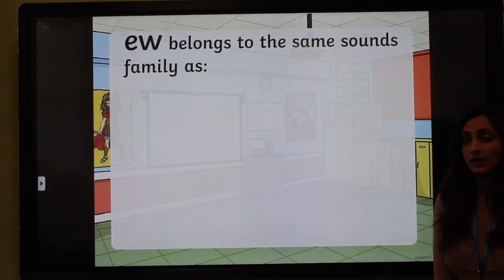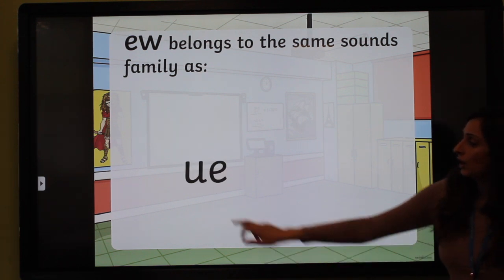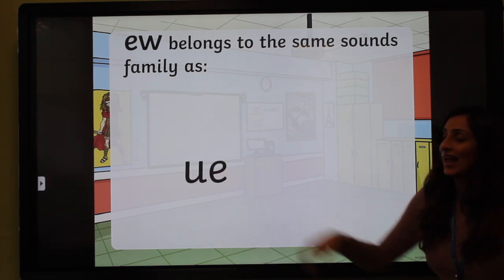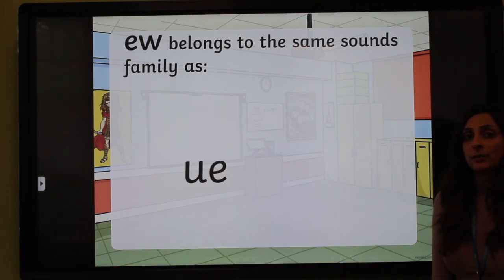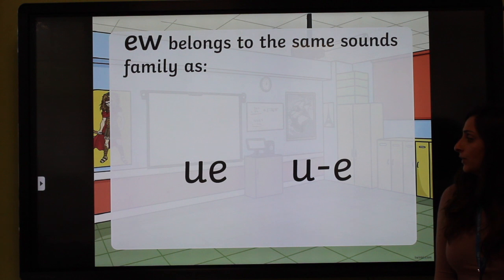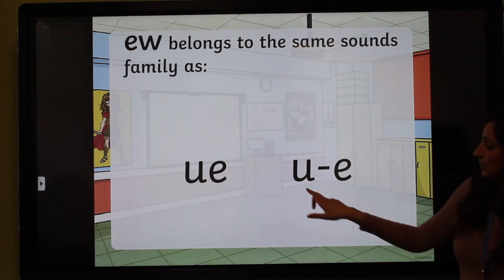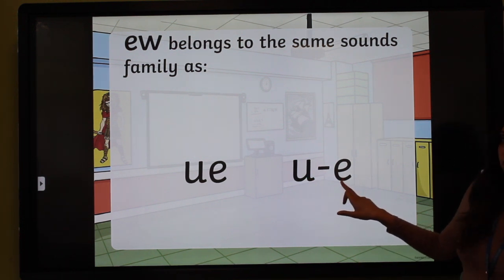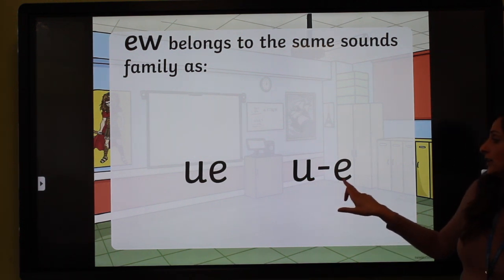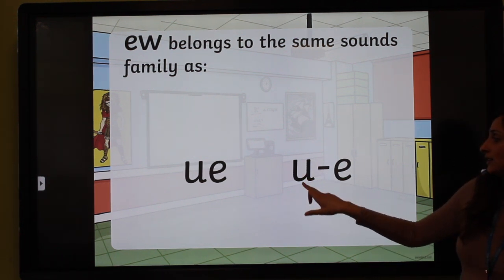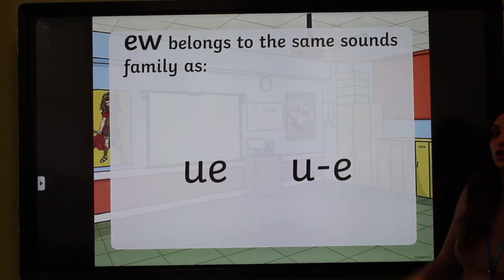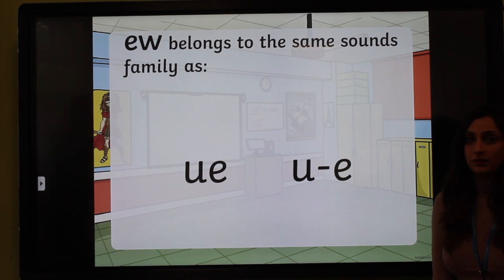Also in this family, we have a U and an E that also makes the U sound — a split digraph — a U and an E that makes a split U sound.